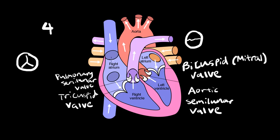Let's go over this one more time. Right atrium to right ventricle: in between there we have the tricuspid valve. From the pulmonary artery and the right ventricle we have the pulmonary semi-lunar valve. Between the left atrium and the left ventricle we have the bicuspid valve, or mitral valve. And between the aorta and the left ventricle we have the aortic semi-lunar valve. Thanks for watching this video.